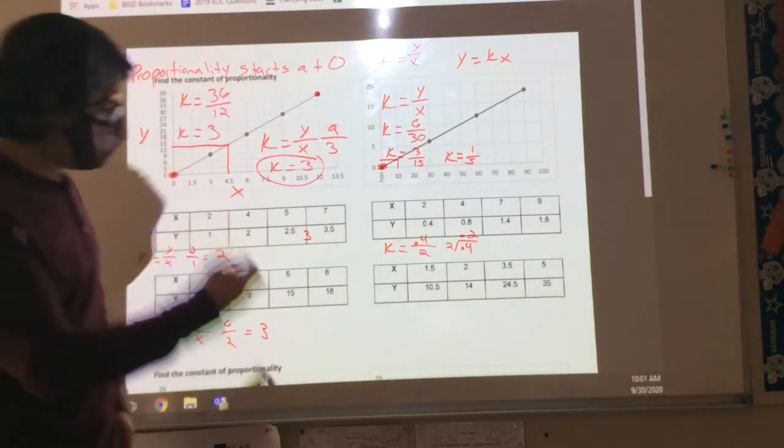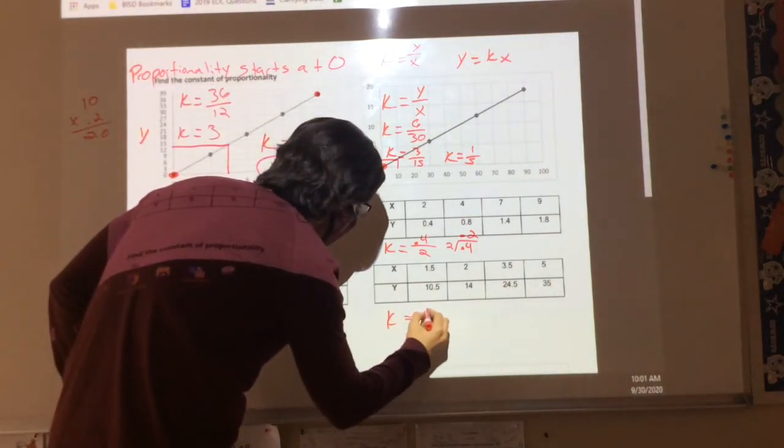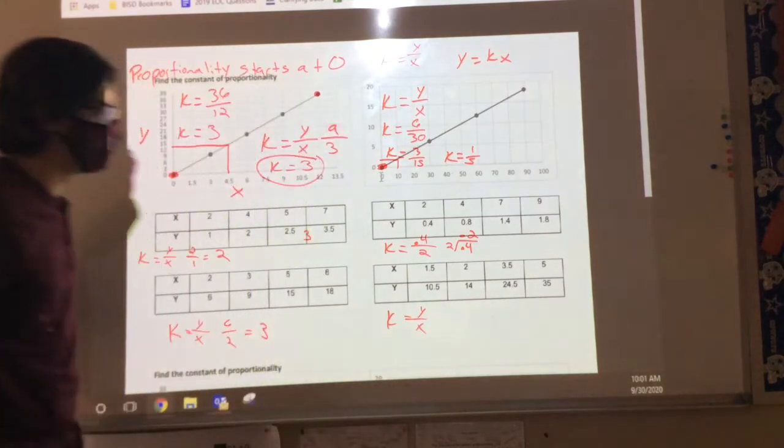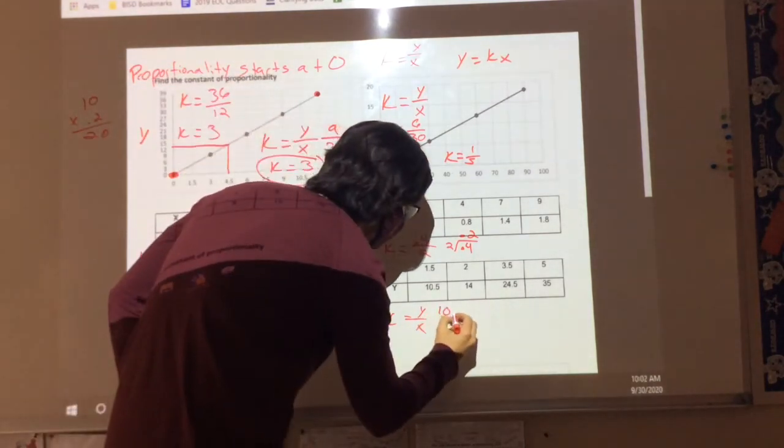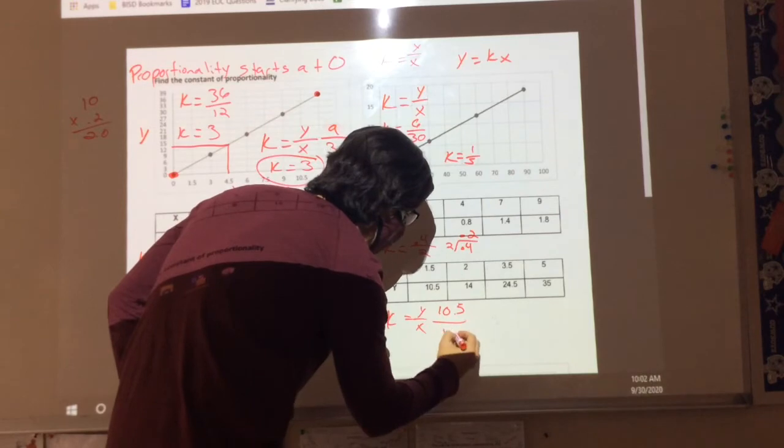So let's do this one. Formula equals K equals Y divided by X. Okay. So I'm going to do 10.5 divided by 1.5. Can you do that math for me, please, without using the calculator?